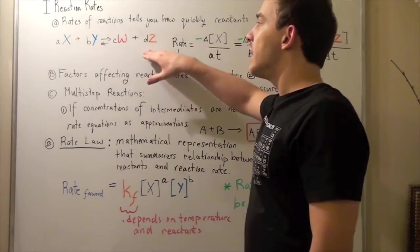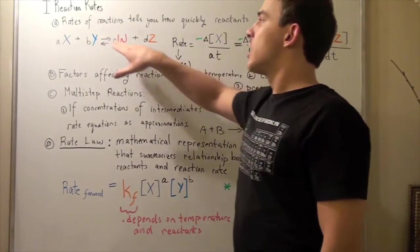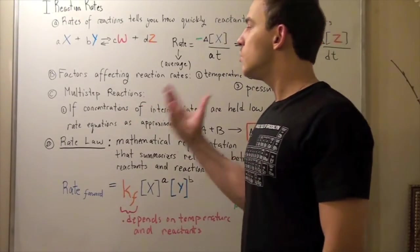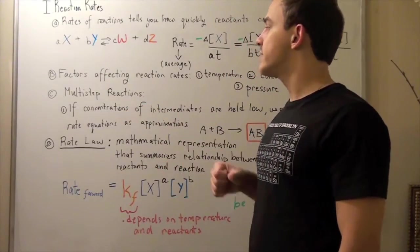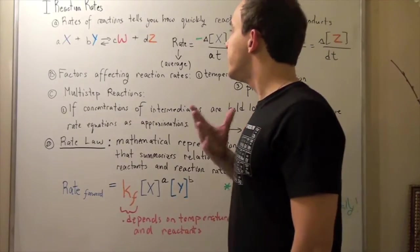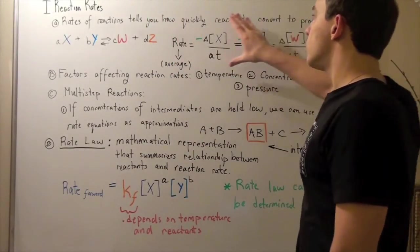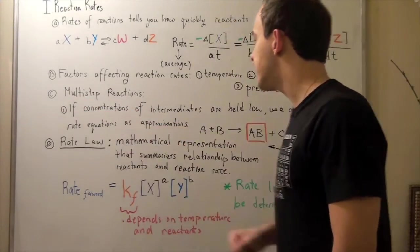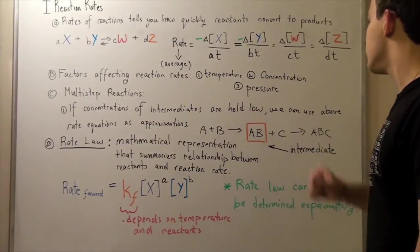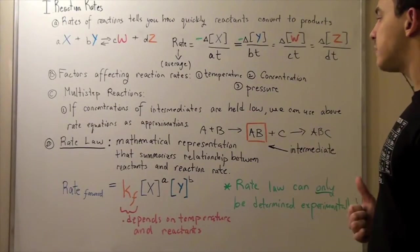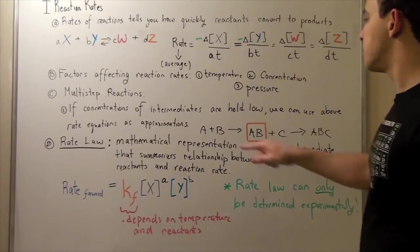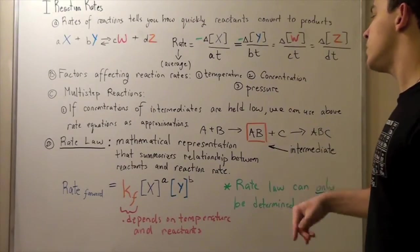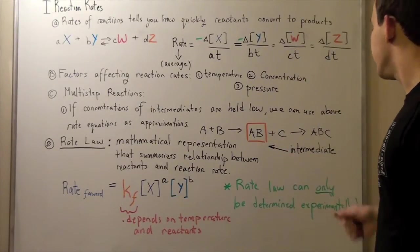We spoke about elementary reactions, in which reactants become products in a single step. There are also multi-step reactions, and those include many different steps, intermediate steps. However, we can use this formula to approximate our rates of multi-step reactions, as long as the concentrations of intermediates are held relatively low. Suppose we have the following reaction. A plus B react to form intermediate AB, and then that intermediate AB reacts with C, some other guy, to form ABC.